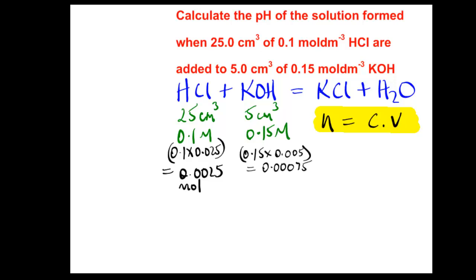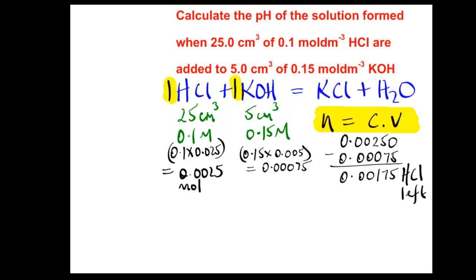Now work out moles of KOH: concentration times volume in dm³ gives 0.00075 moles of KOH. HCl is in large excess, so all 0.00075 moles of KOH will be used up, and the same number of moles of HCl will react. Subtracting, the moles of HCl left over = 0.0025 − 0.00075 = 0.00175 moles of HCl.